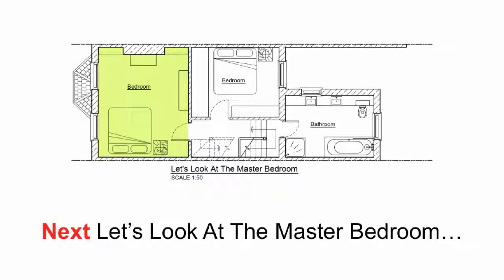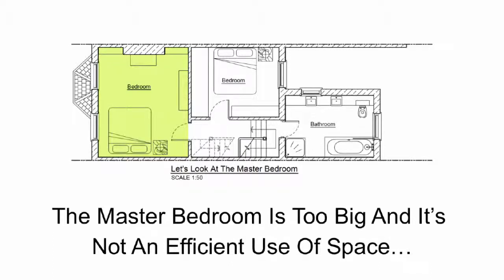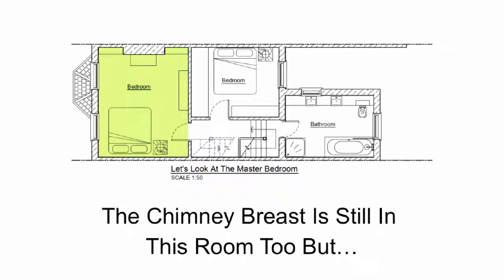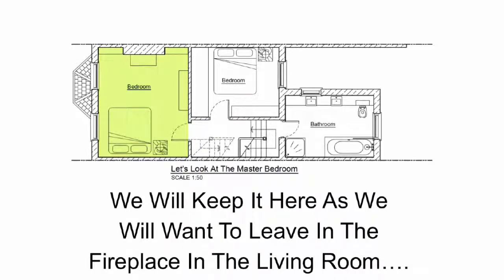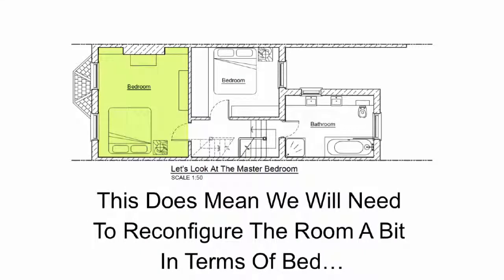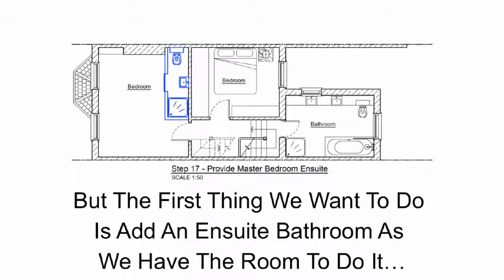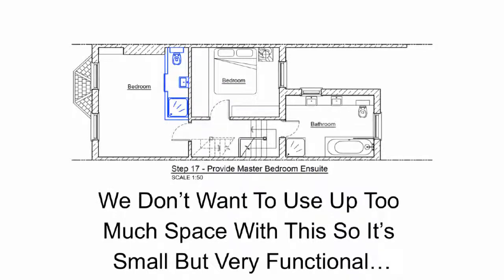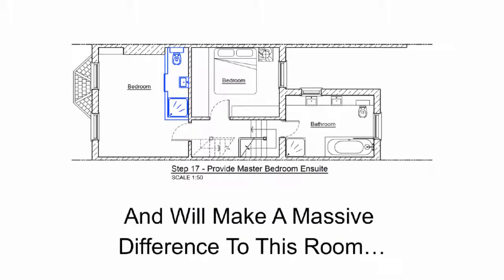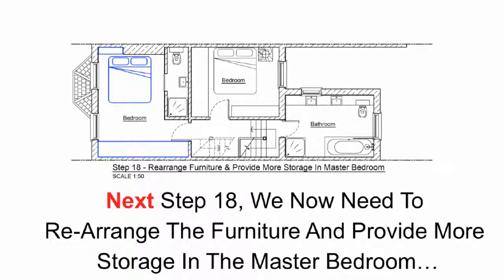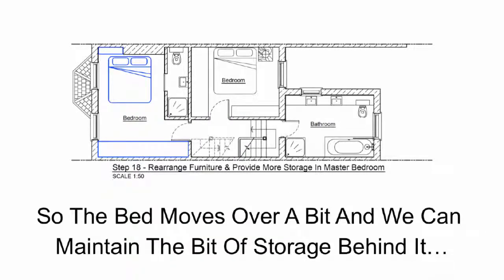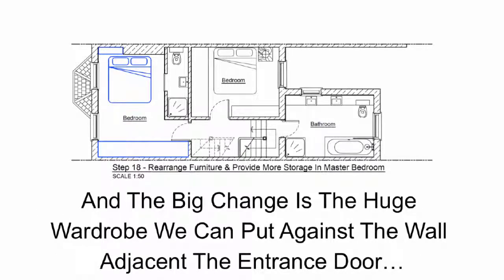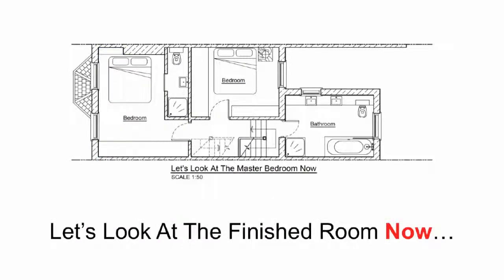Next let's look at the master bedroom. The master bedroom is too big and not an efficient use of space — there is square footage here doing nothing. The chimney breast is still in this room, but we will keep it as we want to leave the fireplace in the living room below. This does mean we will need to reconfigure the room in terms of bed and wardrobe positions. But the first thing we want to do is add an ensuite bathroom — we have the room to do it, so we will put in a toilet, sink, and shower. It's small but very functional and will make a massive difference to this room. In step 18 we rearrange the furniture and provide more storage: the bed moves over a bit, we can maintain some storage behind it, and the big change is the huge wardrobe we can put up against the wall adjacent to the entrance door.